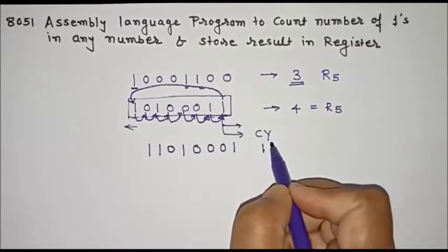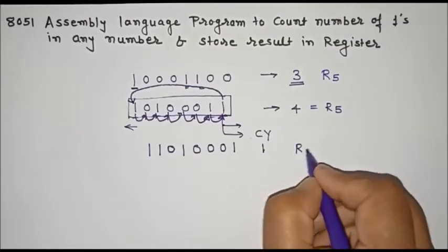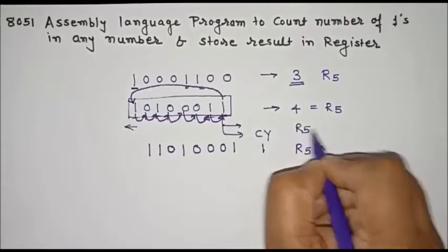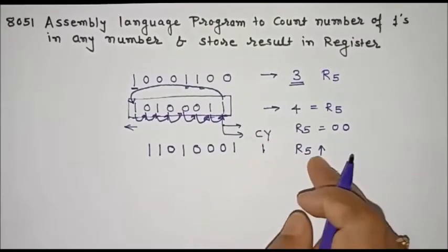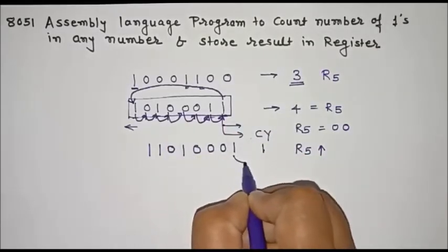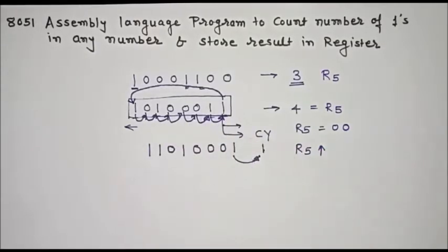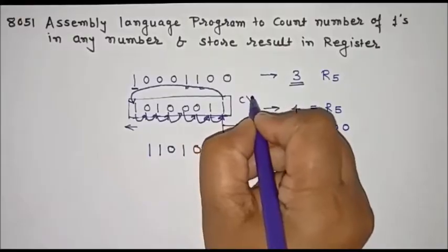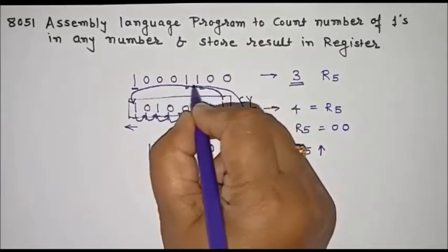After the rotation operation we'll check whether carry is one or zero. If carry is one, we'll increment the contents of R5 by one. Initially we'll initialize R5 with zero. After the first rotation, if carry is one, R5 will be incremented by one. Next, we'll again rotate this number by one with carry, and the rotation is performed again.